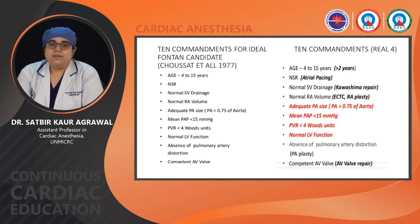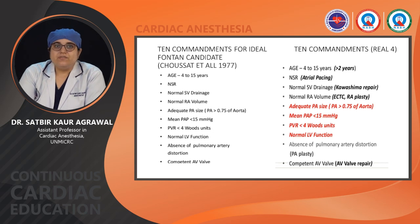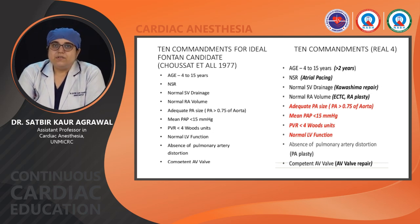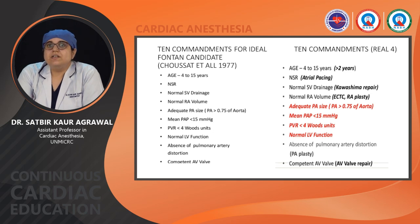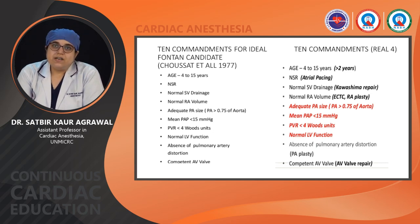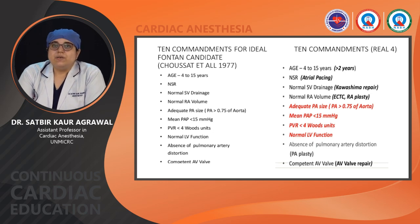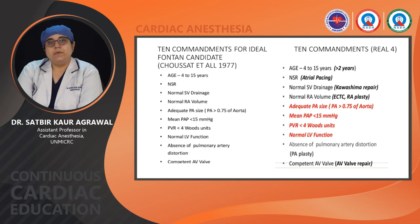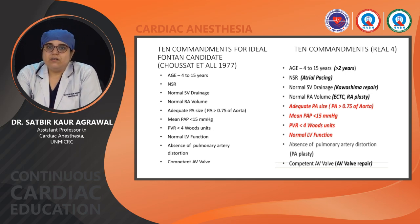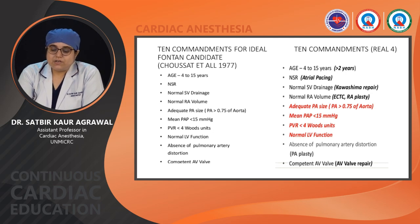After many years and contributions to the Fontan area, solutions have been found for many of these commandments. Age is now around 2 to 4 years. Normal sinus rhythm if absent can be handled by pacing. Abnormal systemic venous drainage can be addressed with the Kawashima repair. Enlarged RA volume can be managed with extra cardiac Fontan or RA plasty. Pulmonary artery distortion can be addressed with PA plasty, and competent AV valve with AV repair. However, adequate PA size, mean PA pressure less than 15, PVR less than 4, and normal LV function still hold true and are required for a good Fontan circulation.